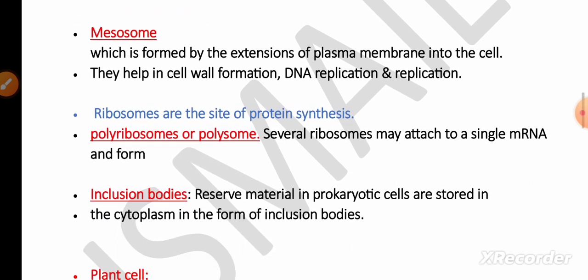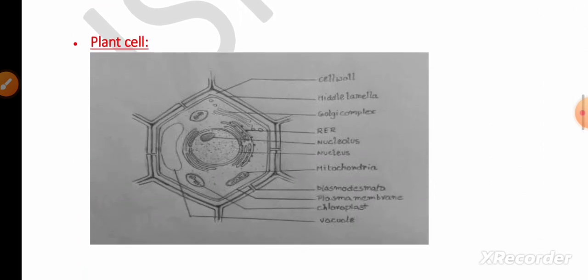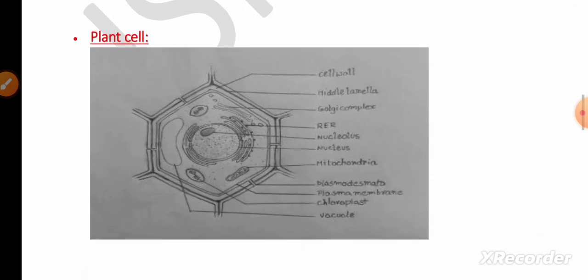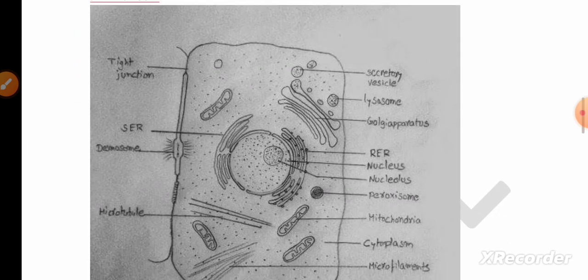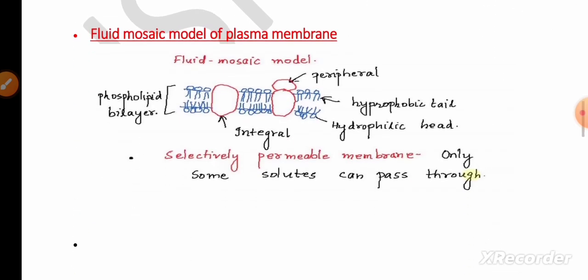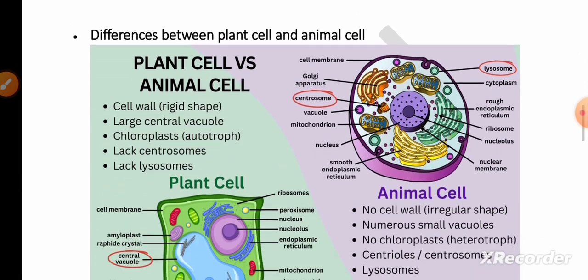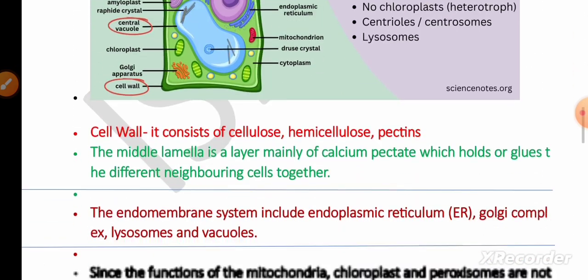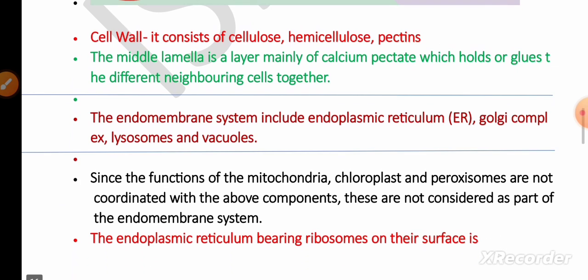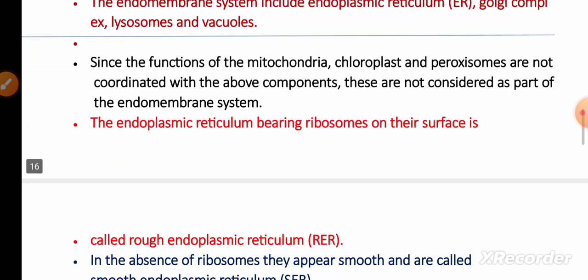From the chapter Cell: The Unit of Life, remember cell theory, mesosome, polysomes (polyribosomes), and inclusion bodies. The diagrams of the plant cell and animal cell are very important for five marks, and the diagram of the fluid mosaic model is also very important. The differences between plant and animal cells are also very important.